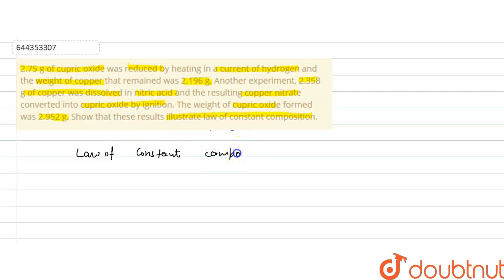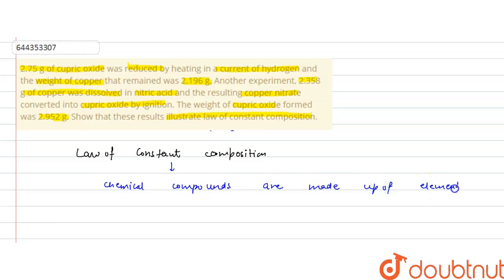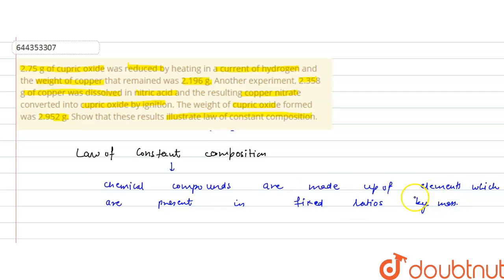The law of constant composition, or proportion, states that chemical compounds are made up of elements which are present in fixed ratios by mass. It means the ratio of the elements that form a chemical compound remains fixed.